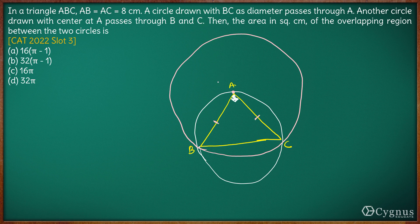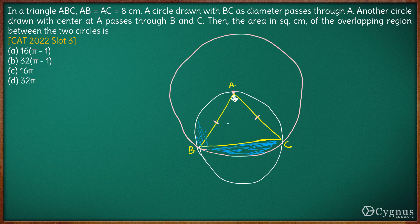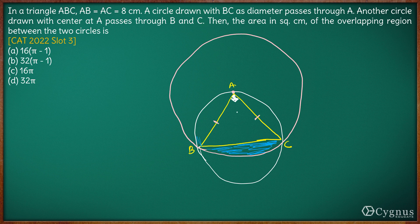We have to calculate the area of the common region. The common region here consists of: first, the smaller semicircle on top, and second, a segment of the bigger circle below. We have to calculate this total area. The upper part is nothing but the semicircle of the smaller circle.